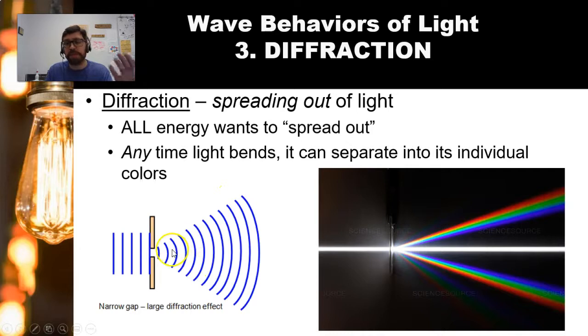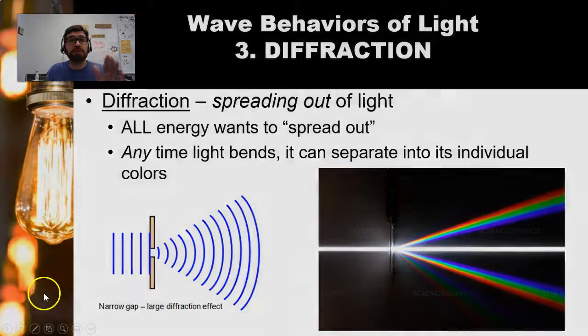So, again, as I said, all energy wants to spread out. This is a great diagram of what's happening here. And, again, any time light bends, as in this case, it simply separates into its individual colors because the blue light and the violet light bend less than the red and orange light do. So that's what diffraction is. Again, one of the most important things to remember about diffraction is that there is no medium change involved.